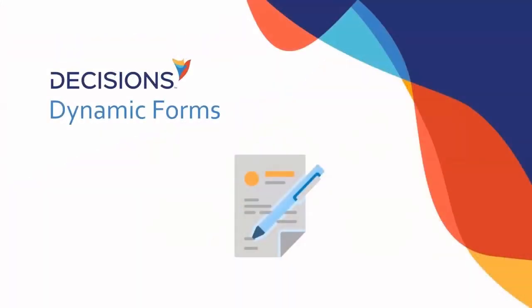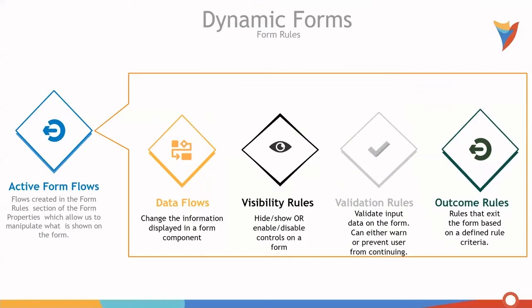Let's take a look at dynamic forms. Dynamic forms are composed of active form flows — these are flows created in the form rules section of the form properties, which allow us to manipulate what is shown on the actual form.